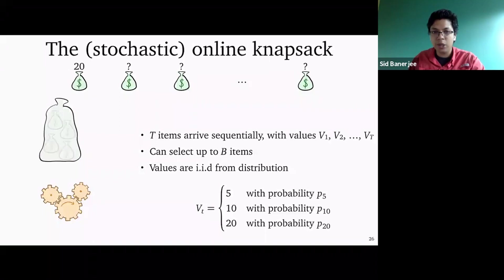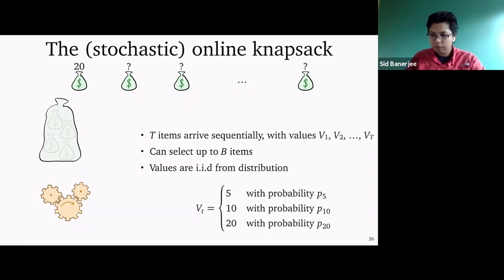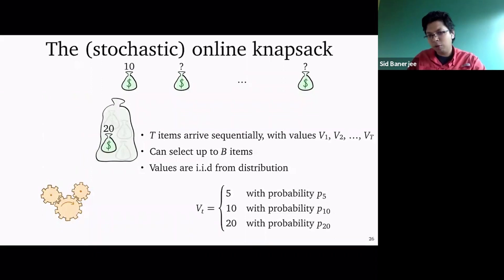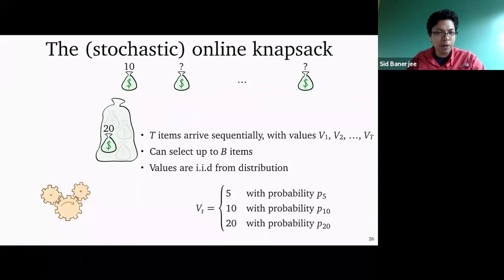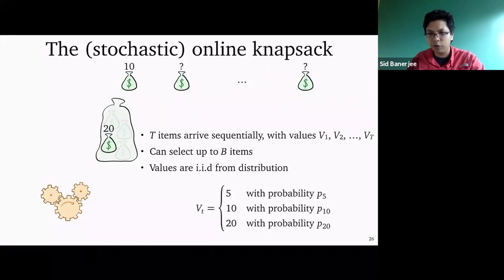For the in-depth study, we look at the stochastic online knapsack with more detail. We have a very large knapsack and T items arriving sequentially with values v1, v2, ..., vT. We know the distribution but not the exact value until the item arrives. For simplicity, assume the values are i.i.d. and take three values: 5, 10, or 20, with probabilities p5, p10, and p20. The first item has value 20 — you should clearly accept it, there's no point rejecting a value 20. For a value of 5, it initially seems like you should reject it. For a value of 10, there's uncertainty about the right action.